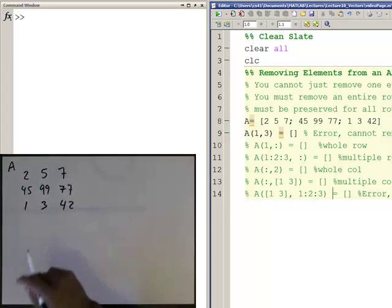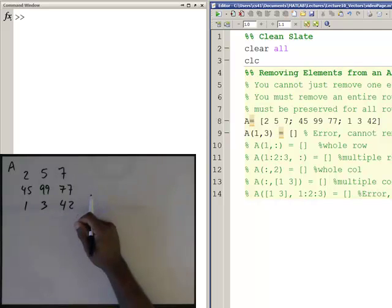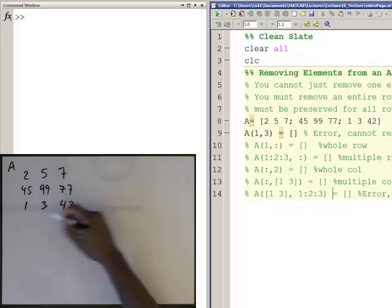And then we're going to start off, we're going to try to remove a single element. Now here's the rule when you're dealing with removing things and just arrays in general: you have to maintain this rectangular or square consistency in the array.